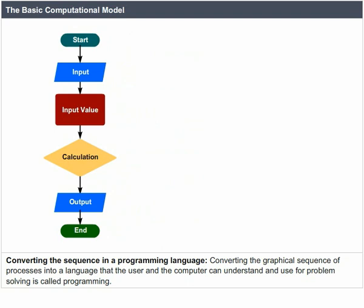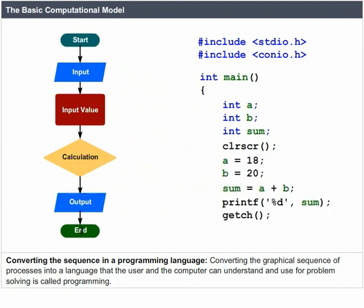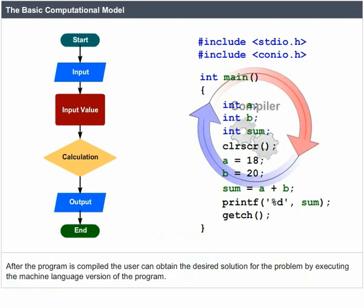Converting the Sequence in a Programming Language. Converting the graphical sequence of processes into a language that the user and the computer can understand and use for problem solving is called programming. After the program is compiled,